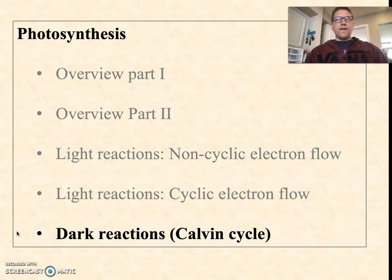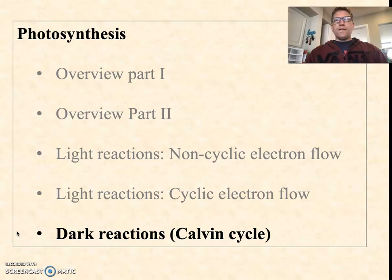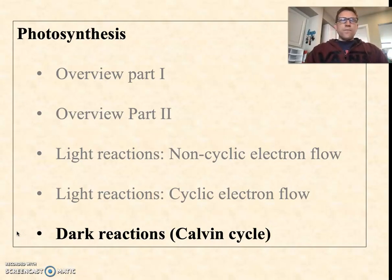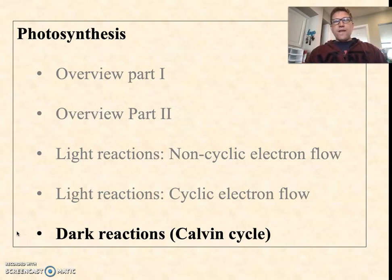Hey guys, this is the final fifth installment of this series on photosynthesis and the biochemistry of photosynthesis. Now we're going to get down to the nuts and bolts of the Calvin cycle, sometimes called the dark reaction — not because they necessarily take place in the dark, but because they don't need light. Once the light reactions have supplied all the ATP and NADPH that's needed, the Calvin cycle can start building organic matter from CO2.